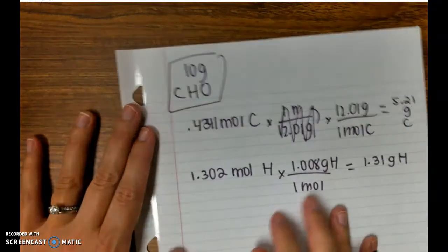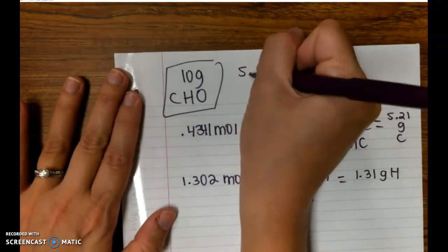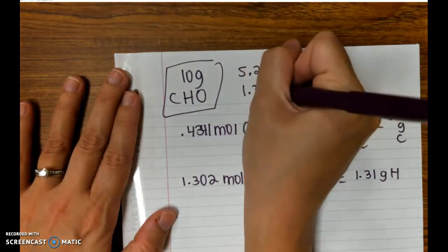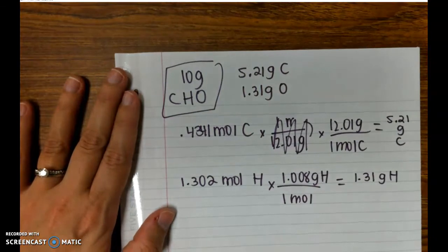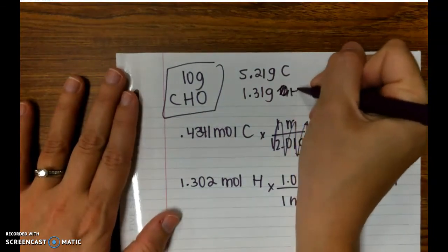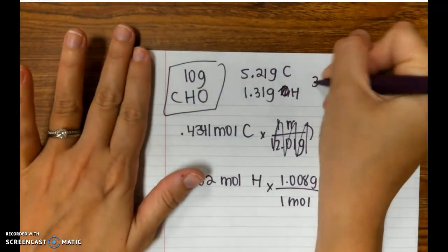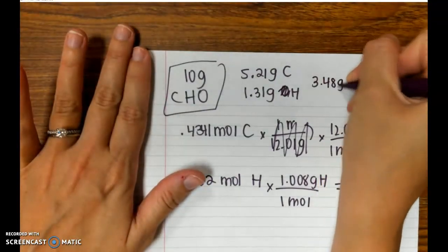So if I had 10 grams of this to start out and 5.21 grams were carbon and 1.31 grams were hydrogen, how many grams were oxygen? Easy. You just subtract. 10 minus 5.21 minus 1.31, we had 3.48 grams of O.